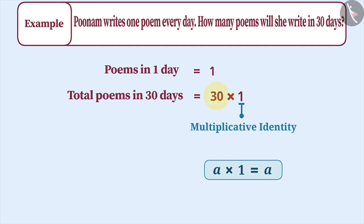Therefore, 30 times 1 is 30, which means Poonam can write 30 poems in 30 days.